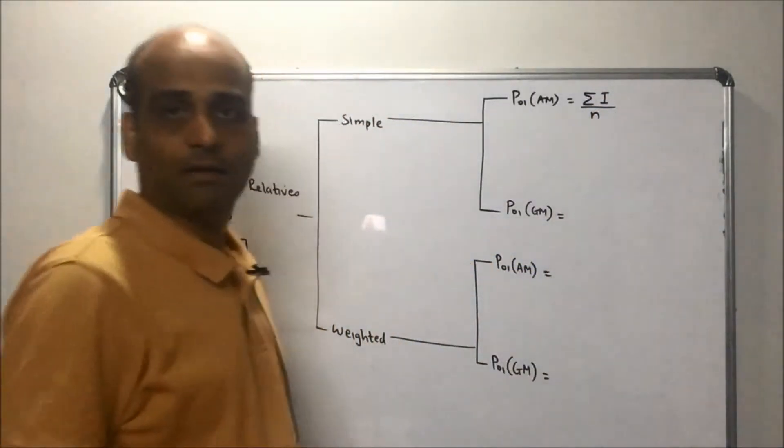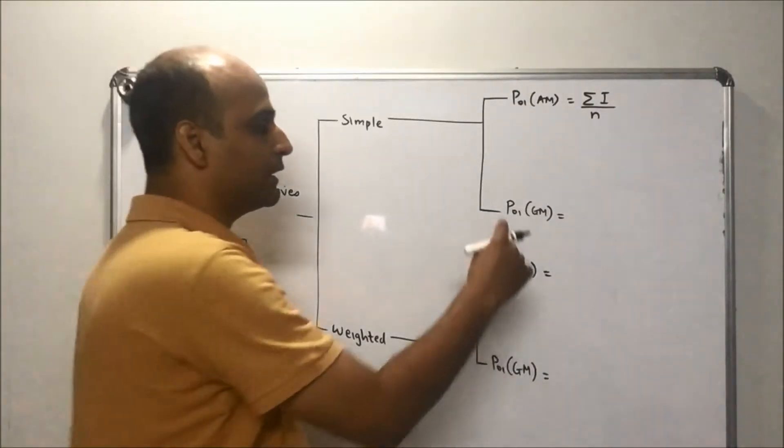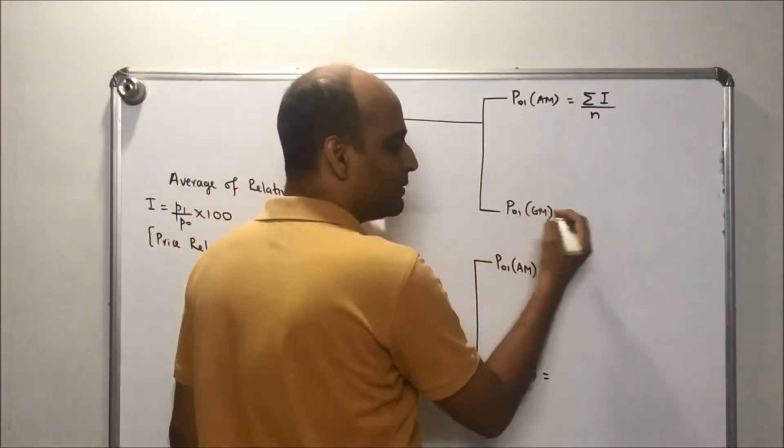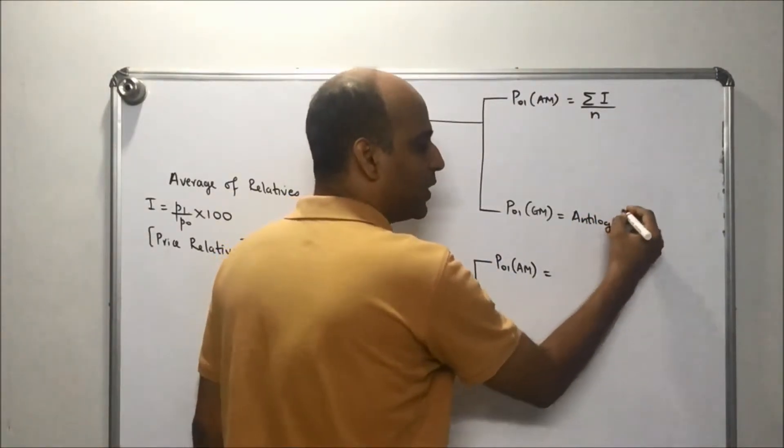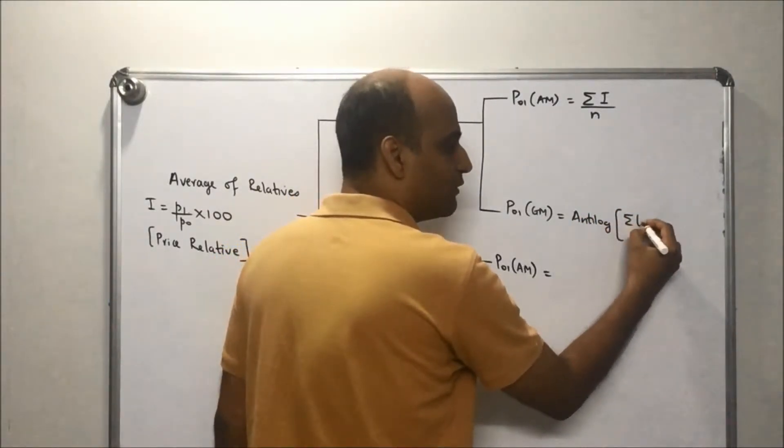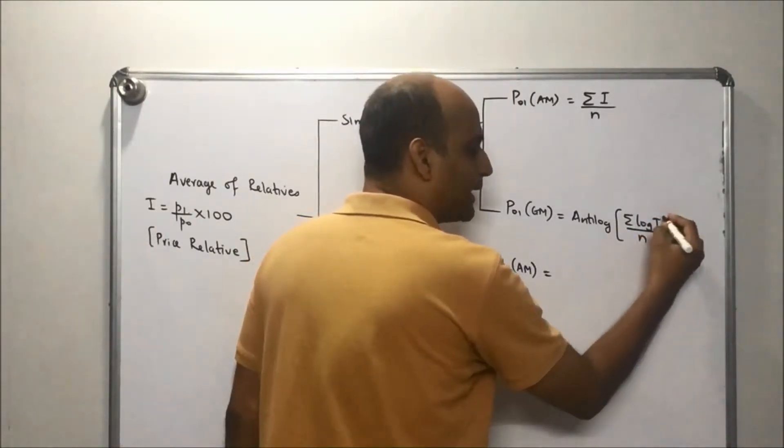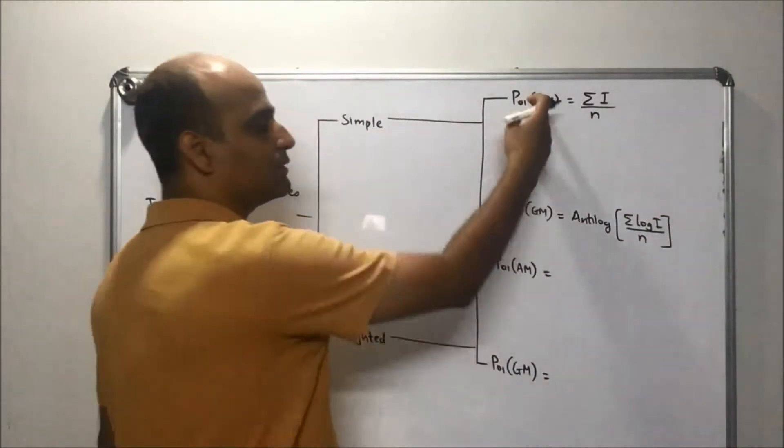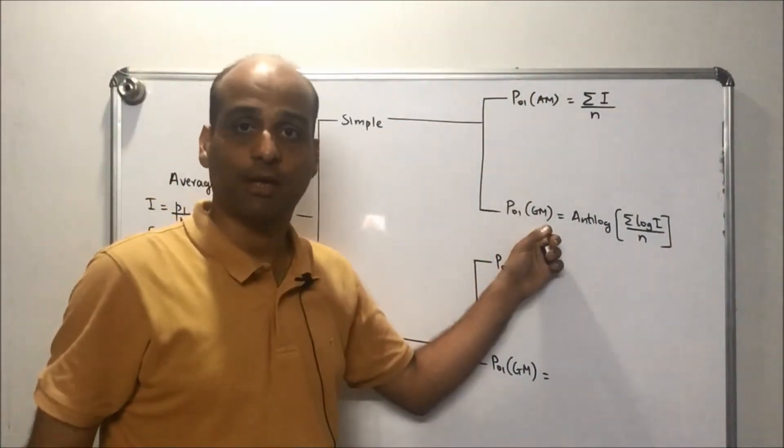Next is geometric mean. You have the formula as antilog summation of log I upon n. So these are the two formulae under simple using AM and using GM.